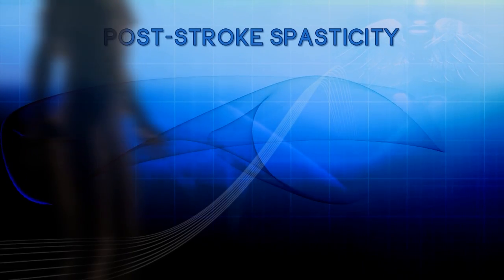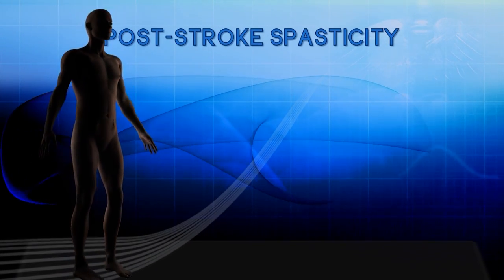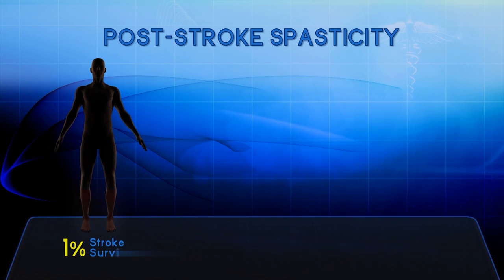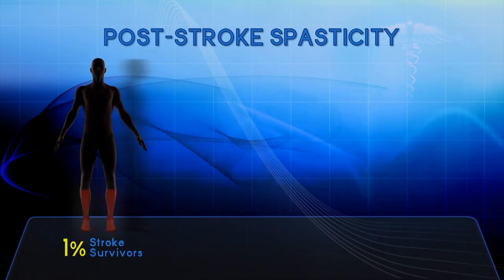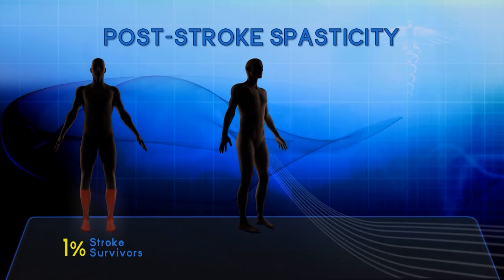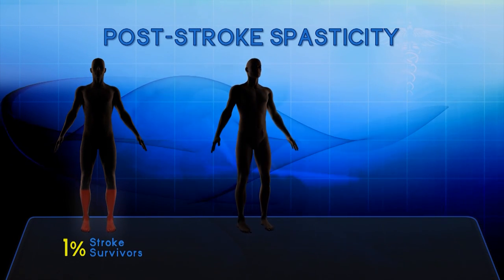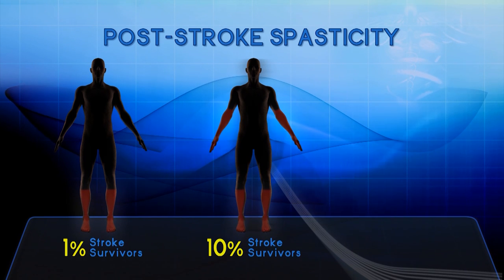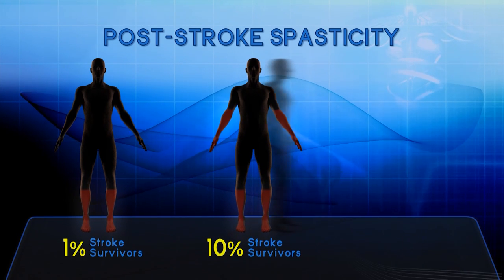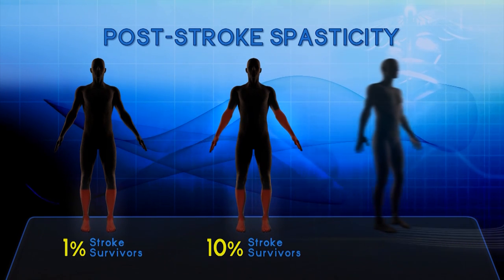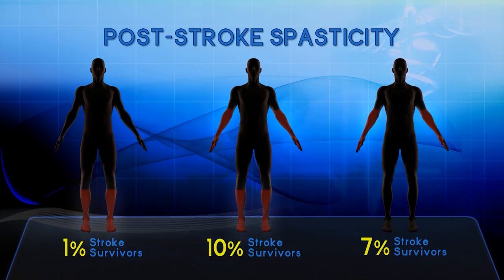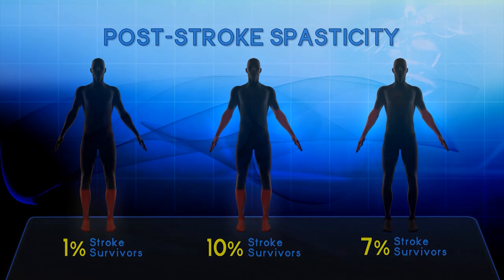Having spasticity exclusively in the lower limbs is extremely rare — only about 1% of stroke survivors who experience spasticity will have this type. 10% will have upper and lower body issues, and 7% will have upper body spasticity only.